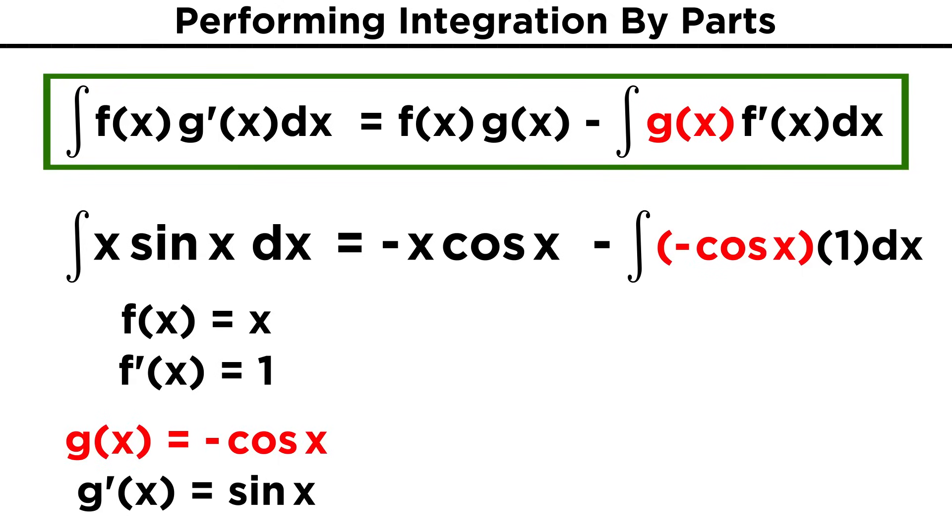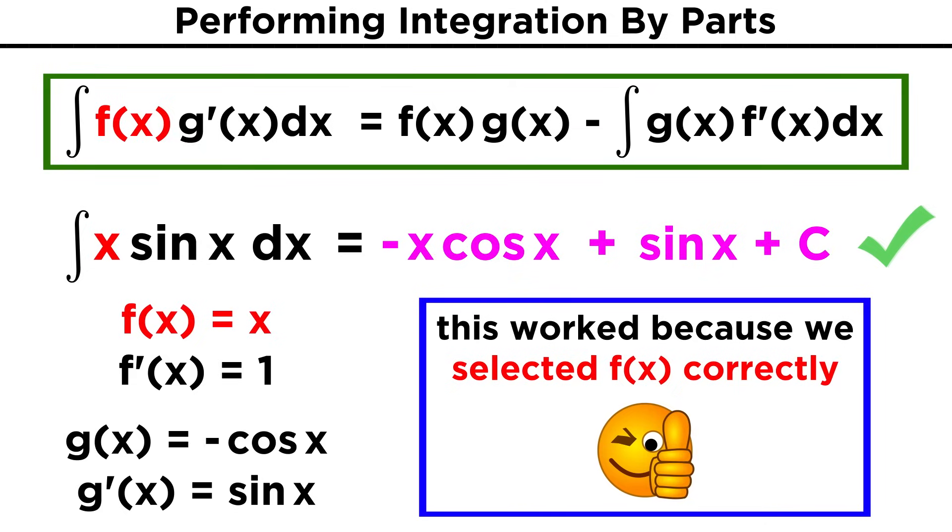We know that g(x) is negative cos(x), as we just said, but here's the best part, f'(x) is one, so this second integral is simply negative cos(x). We can take out the negative sign to cancel out the first one. Cosine x is trivial to integrate, it's sin(x). So we are left with negative x cos(x) plus sin(x) plus c. So bear in mind that the reason this worked is because we chose the function for f(x) that would yield an f prime function that would make this second integral much easier to evaluate than the first.